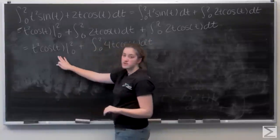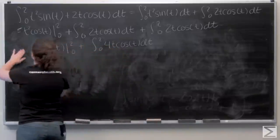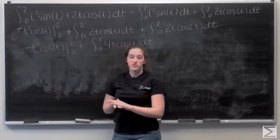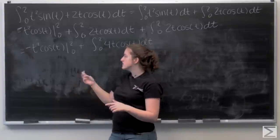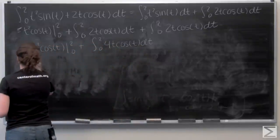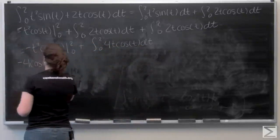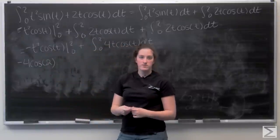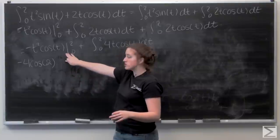Let's evaluate the boundary term first: negative t² cosine(t) evaluated from 0 to 2. Plugging in 2 gives negative 4 cosine of 2, and plugging in 0 gives 0. So that portion contributes negative 4 cosine of 2.